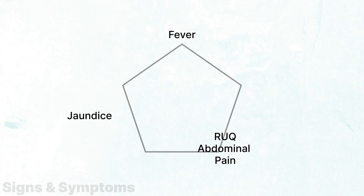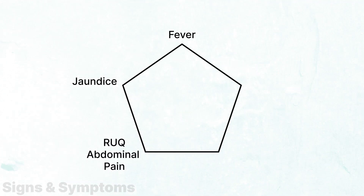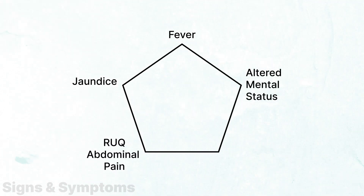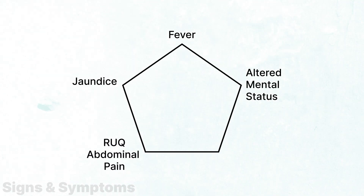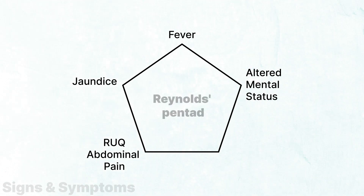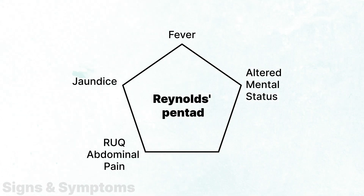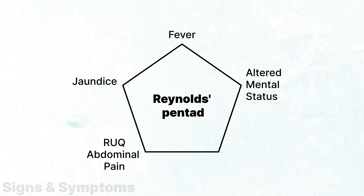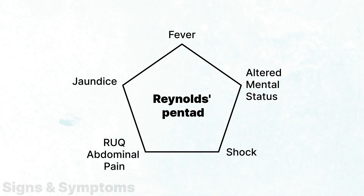In this case, the patient also presented with disorientation and confusion, which can be seen in more severe circumstances, often referred to as Reynolds Pentad. This Pentad includes the signs and symptoms of Charcot's triad, plus altered mental status and shock.